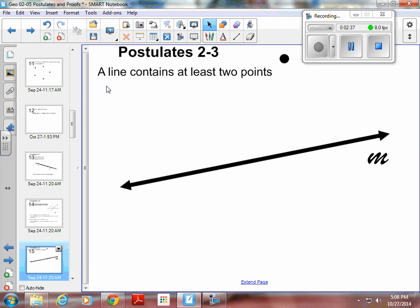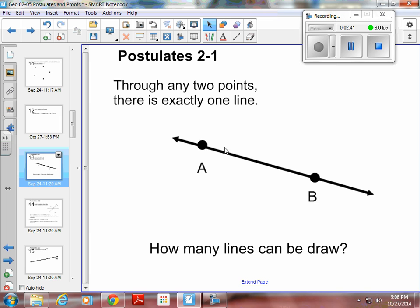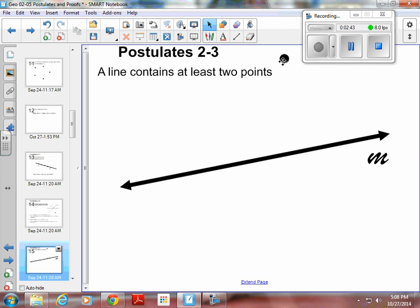Postulate 2-3. A line contains at least two points. So if we go back here, two points will give you one line. Well, if you have two points, a line, you have two points on that line, and you can name them something. So two points. There is definitely at least two points on that line.